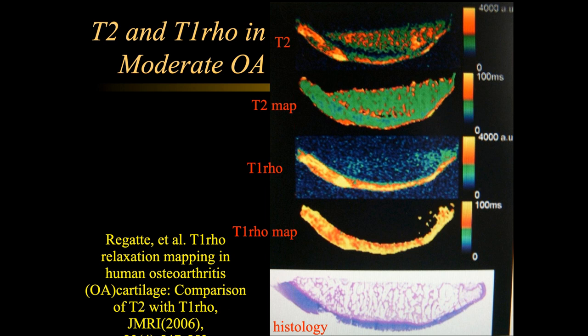We'll continue with our look at articular cartilage with MR. Here was a study done back in 2006 looking at different pulse sequences: a T2 weighted image, a T2 mapping image, and a T1-Rho and T1-Rho map. T2 mapping is where you get multiple echoes in a voxel and calculate an exponential to more accurately determine the actual T2 time, whereas a T2 weighted image uses a single echo with a delayed TE — giving some T2 weighting but not an actual numerical T2 value for the voxel.